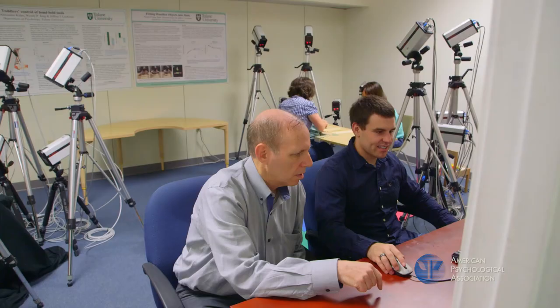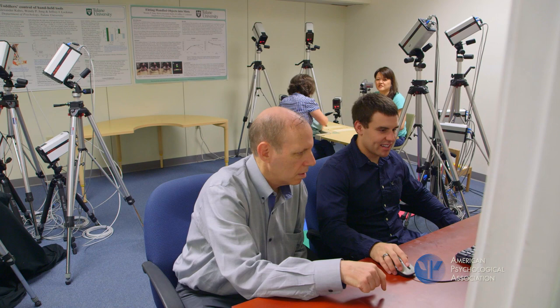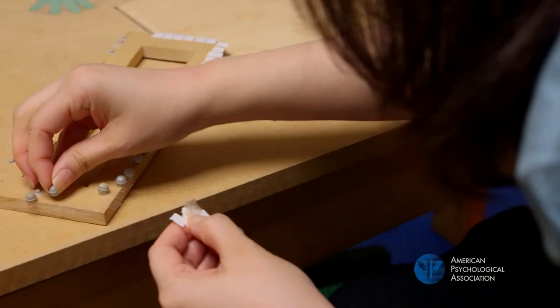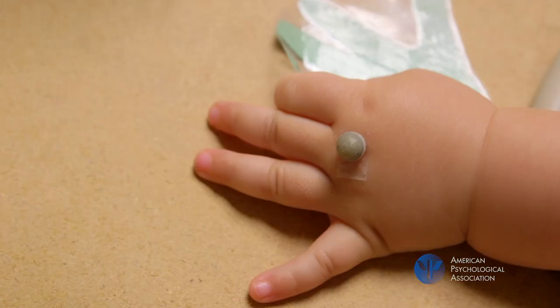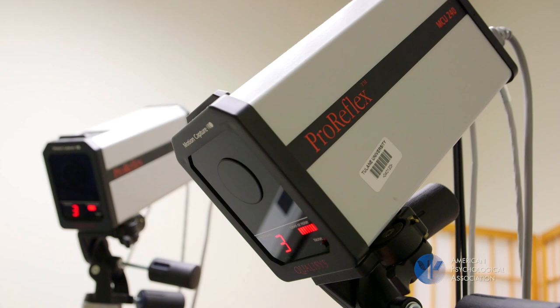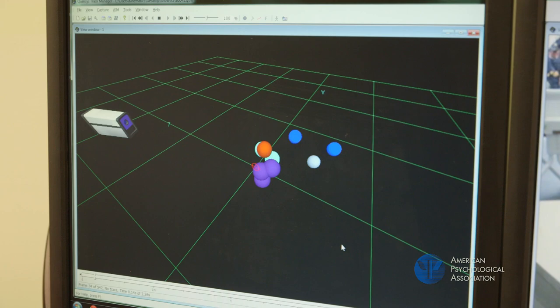When we do these studies we're very careful to use a scientific approach. We use a set of procedures known as motion tracking or motion capture technology. This is very similar to what is used in movies. We can uncover the organization of their motor skills and what's changing with development.